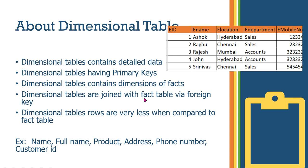Dimension tables are joined with fact tables via a foreign key. Dimension tables are very small when compared to fact tables. For example, dimension tables might have 1,000 rows while fact tables have nearly 10,000 rows.